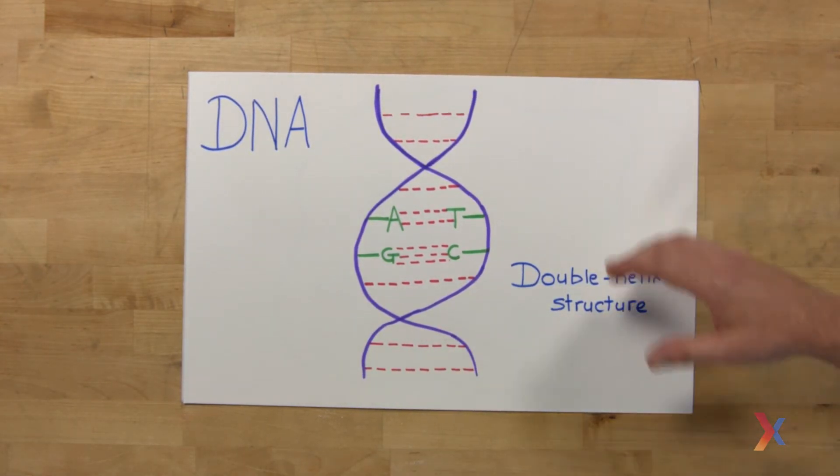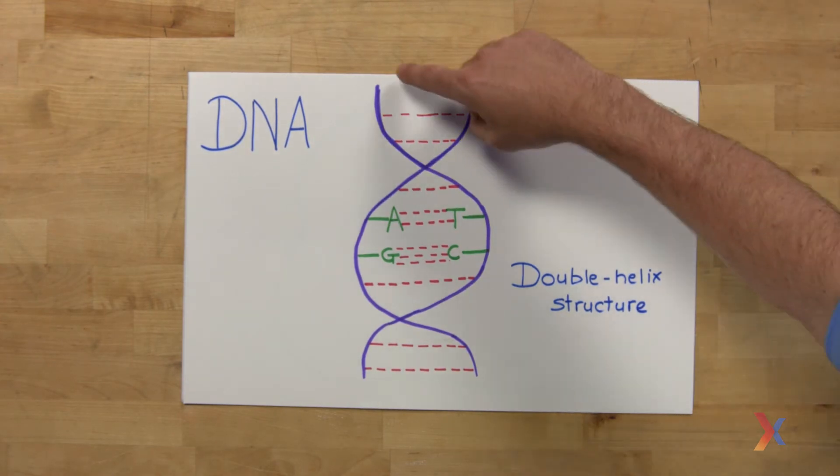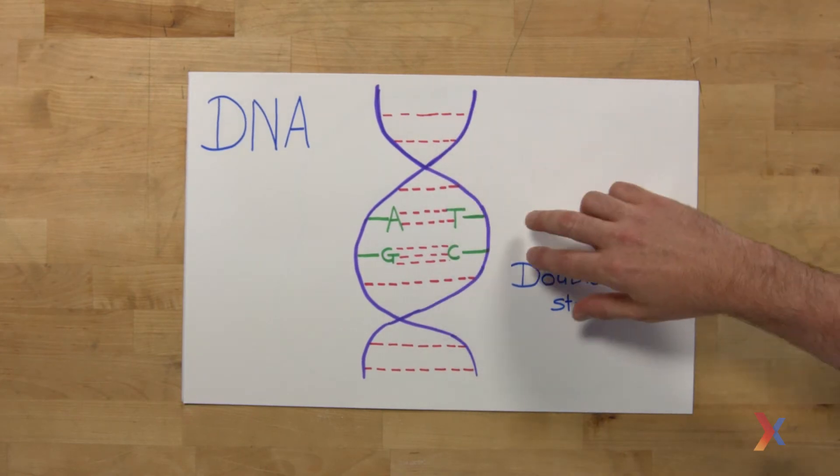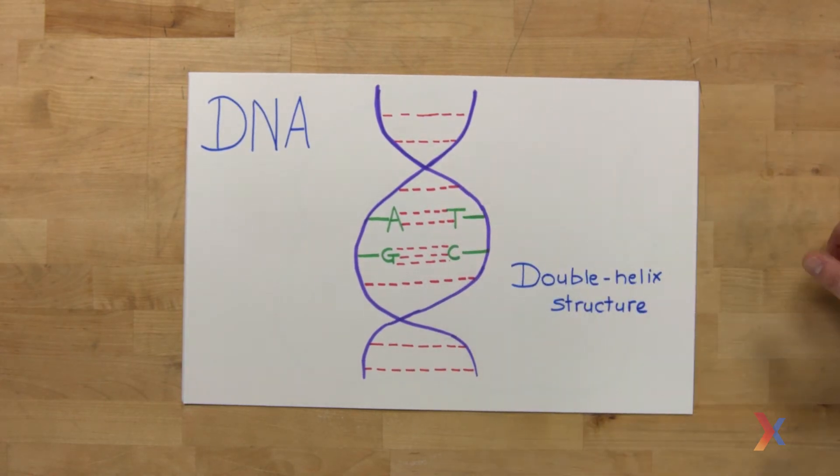And the double helix is sometimes called the twisted ladder. And when we see this, we see that there is a backbone to each of the two strands. And then coming out of those backbones, we see the bases.